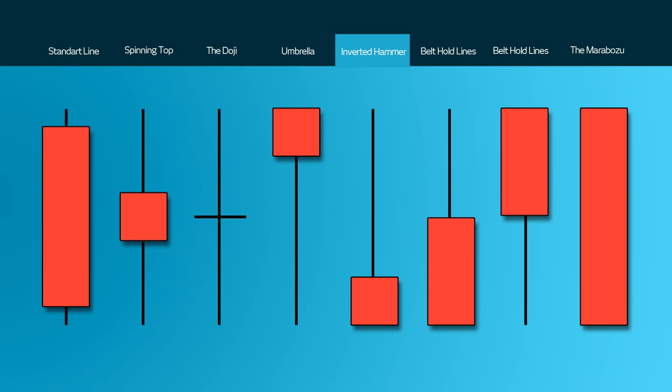The inverted hammer appears at the bottom of a downtrend, and while at the top of an uptrend it's known as a shooting star. After a decline, the long upper shadow indicates buying pressure during the session. You would need confirmation after an inverted hammer followed by a gap up or a long green candlestick with heavy volume to give you a bullish confirmation. For the shooting star the opposite is true — it will come at the top of an uptrend and then you will seek a long red candlestick to confirm your earlier notions that the decline is about to take place.